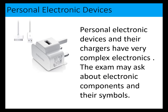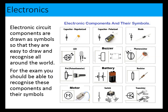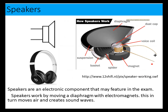Personal electronic devices and their chargers have very complex electronics. The exam might ask about simpler electronic components and their symbols. Electronic circuit components are drawn as symbols so they are easy to draw and recognizable worldwide. You should be able to recognize these components and their symbols and know the function of each. Speakers work by moving a diaphragm with electromagnets, which in turn moves air and creates sound waves. Here is a sectional view of a speaker with magnet and diaphragm, and the electronic symbol for a speaker.